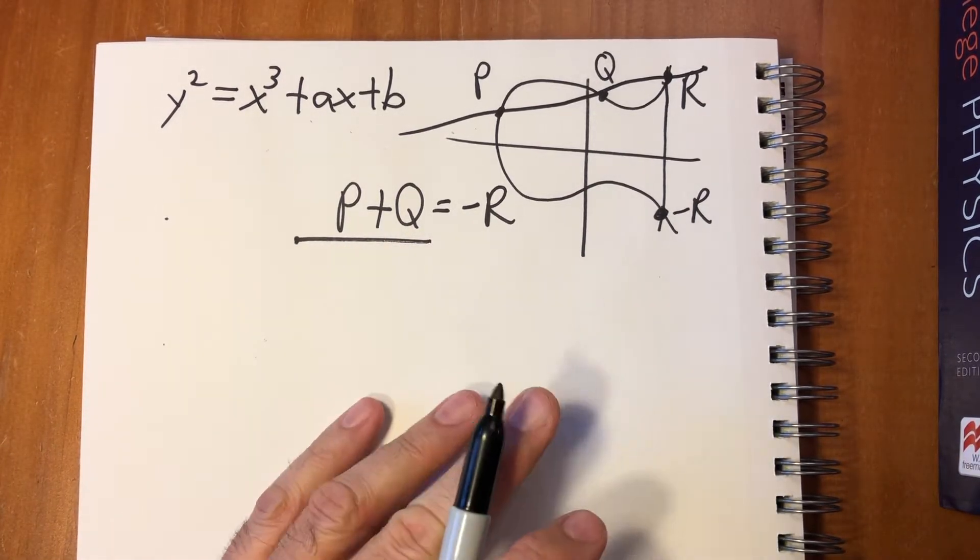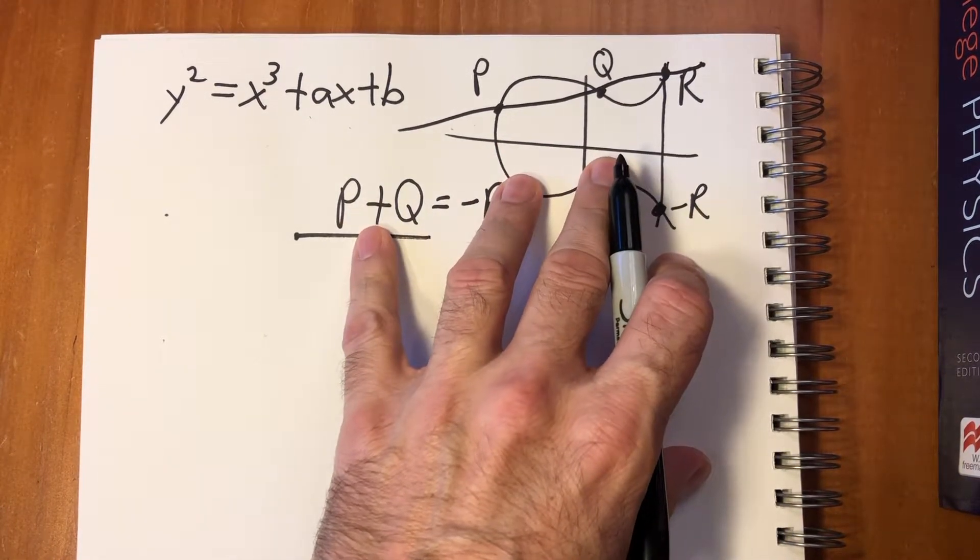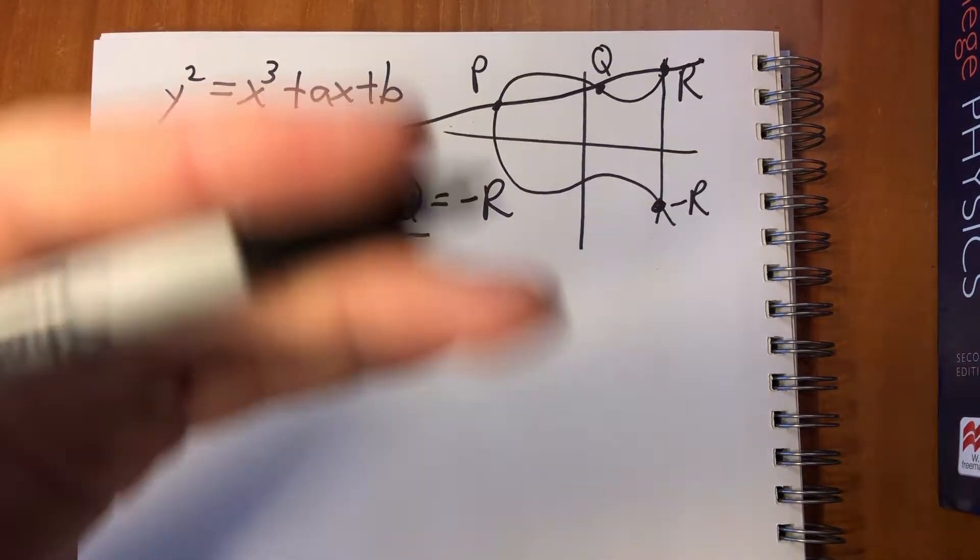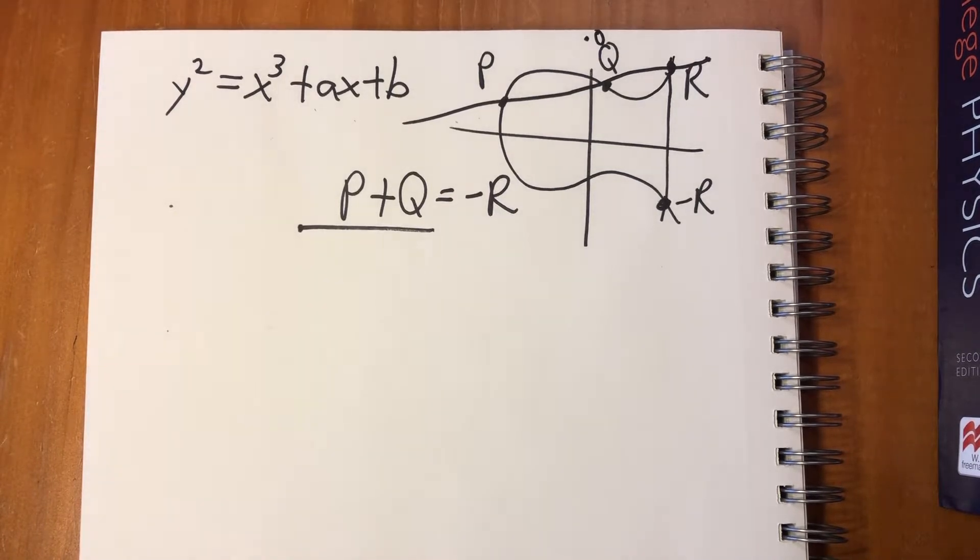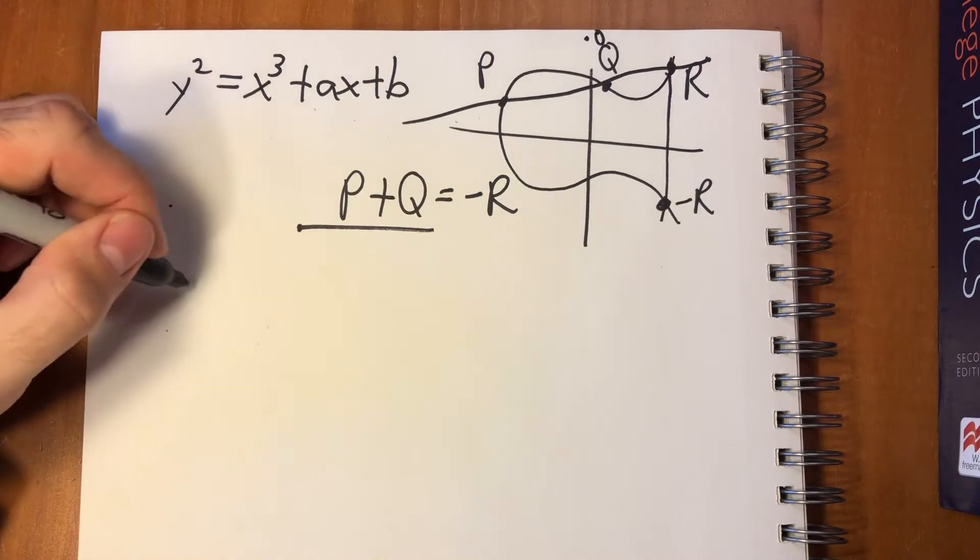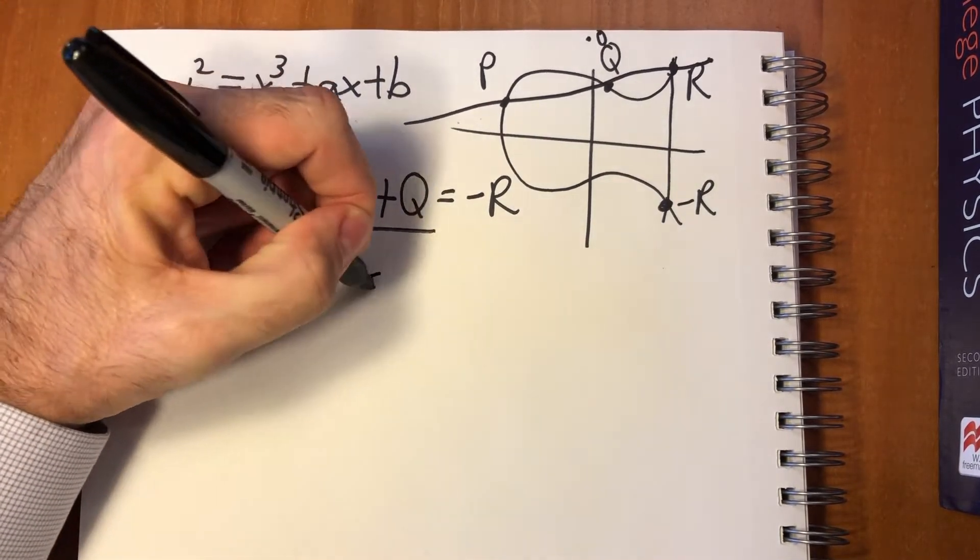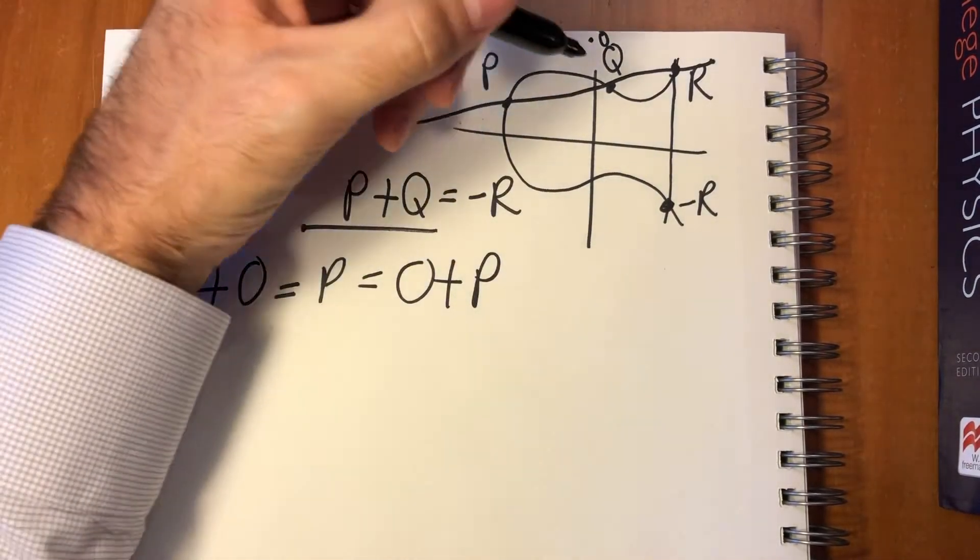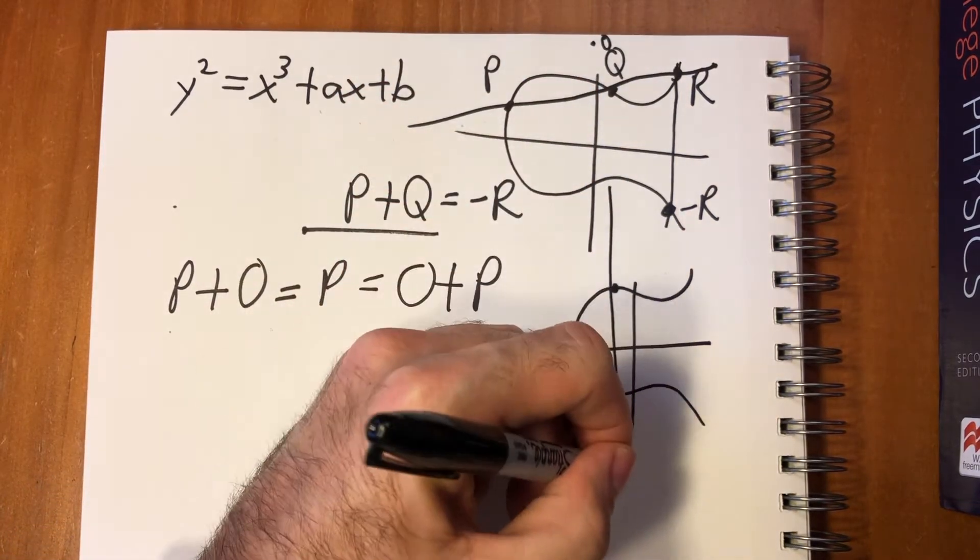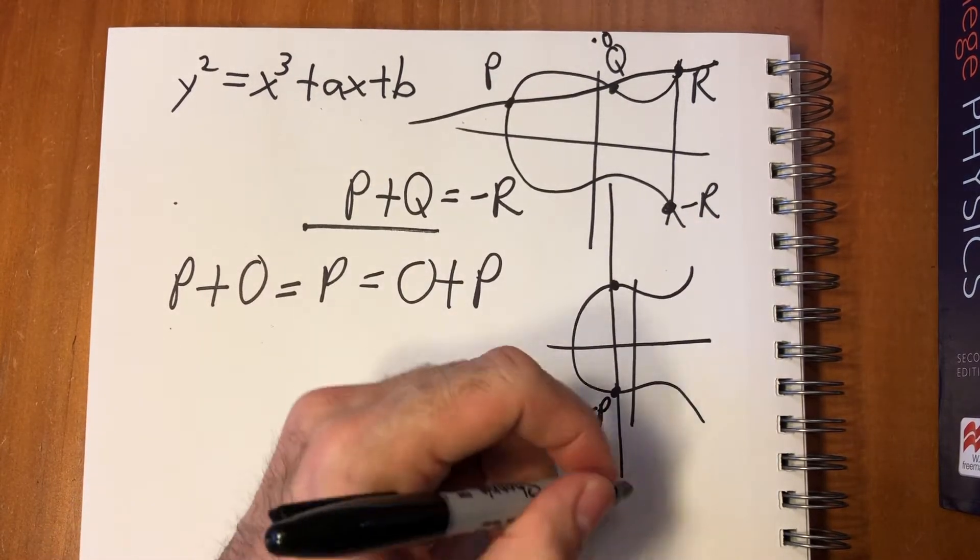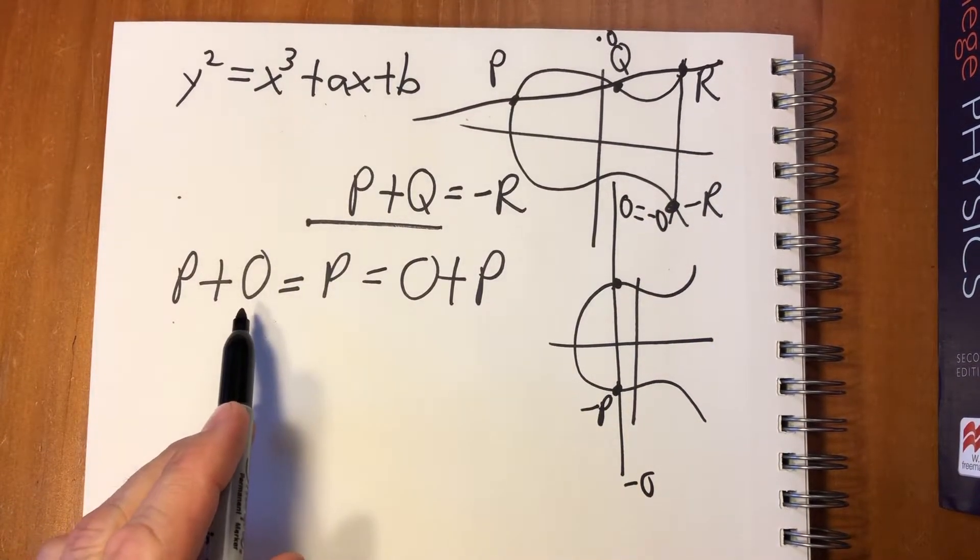The problem is that's not always going to work. The reason that we have to mention the projective plane is we're looking at these curves on the projective plane, which means we're adding a point at infinity above the y-axis. And that is going to be our identity. So P + O = P, and that also equals O + P. So there's an identity.